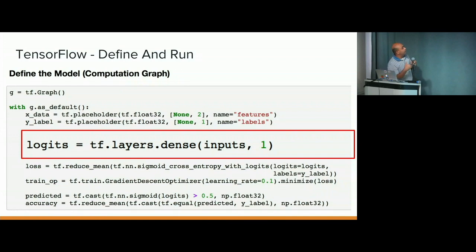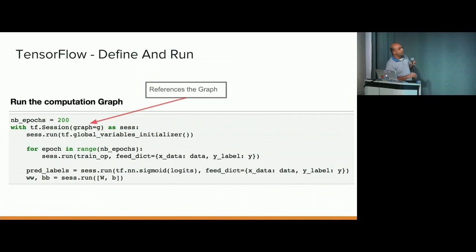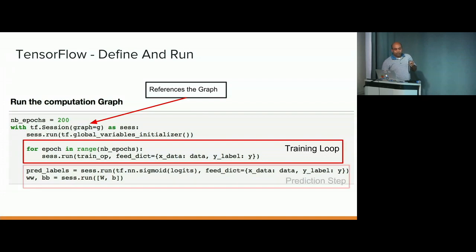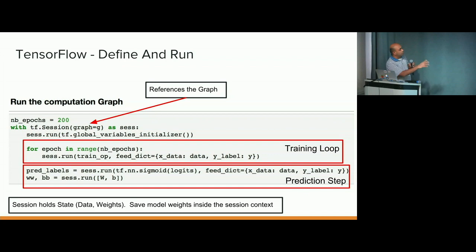And then you would independently run the graph. When you run the graph, you would reference the backup. When you run the graph, you are creating a session. And then in the session, you reference the graph. And then you have a training loop where for n number of epochs, you keep running this until the weights get updated to a reasonable place. And then you can run predictions on that model. So the previous slide was defining the graph. This slide is running the computation graph. And then the session holds all the weights, all the state. And then you have to save the weights in the session for you to reload the graph with the state.